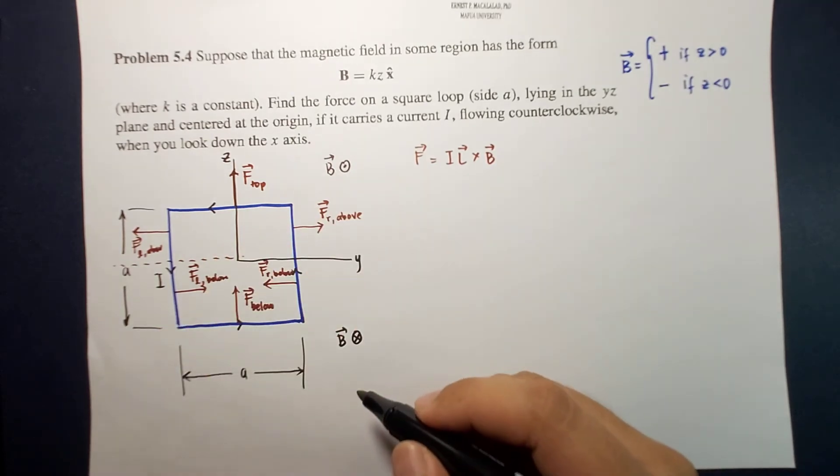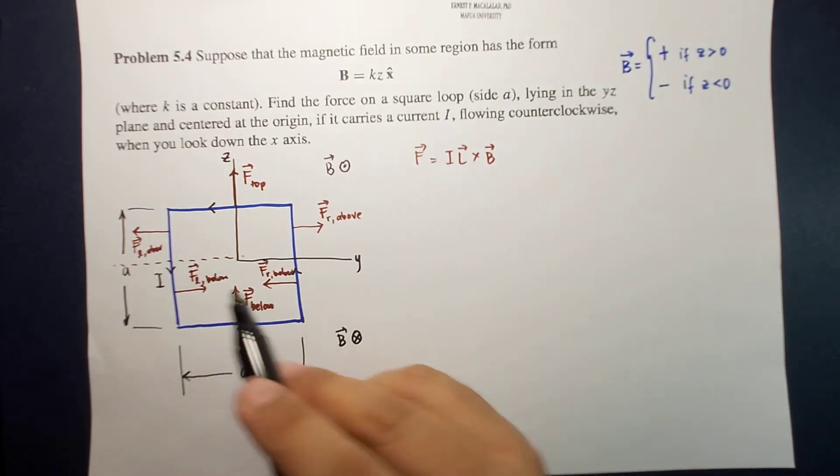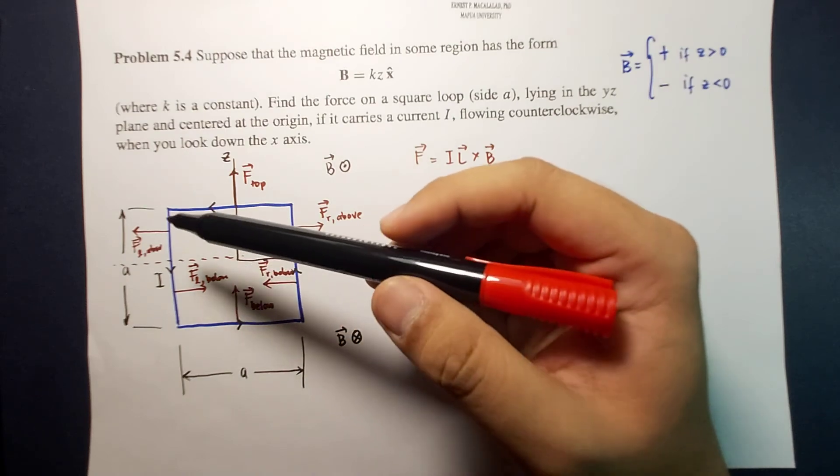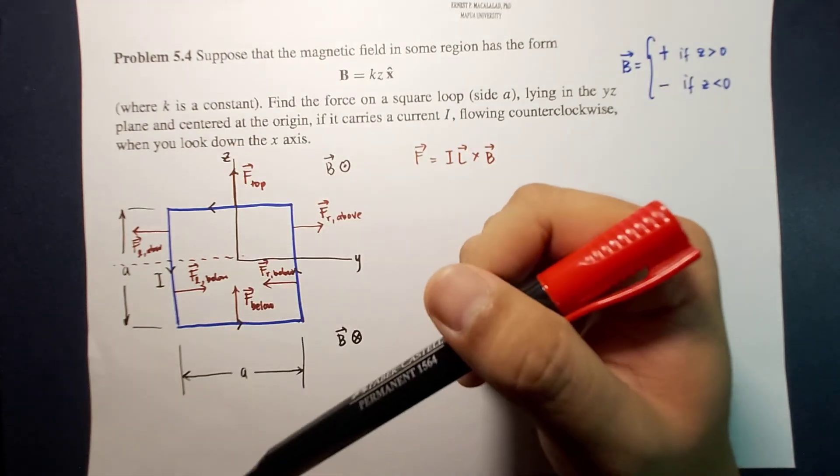So you will notice that by symmetry, these forces will just cancel each other. So therefore, only the forces along the z-axis do not cancel each other.